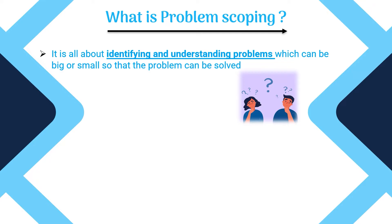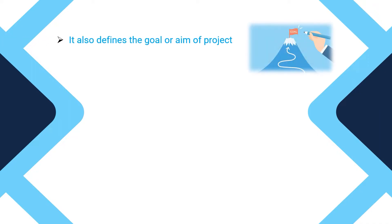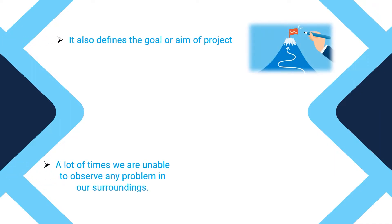So, what is problem scoping? Problem scoping is all about identifying and understanding problems, which can be big or small, so that the problem can be solved. We can also define it as: problem scoping refers to understanding a problem and finding out various factors which affect the problem. Problem scoping also defines the goal or aim of the project.